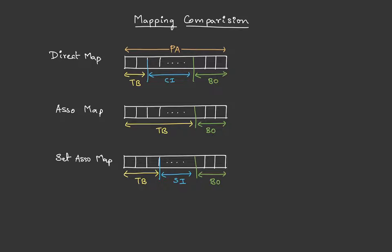When we compare direct mapping with set associative mapping, we will see that the set index is actually smaller than the cache index by a few bits. These few bits are nothing but log k, where k is the number of lines inside a set.